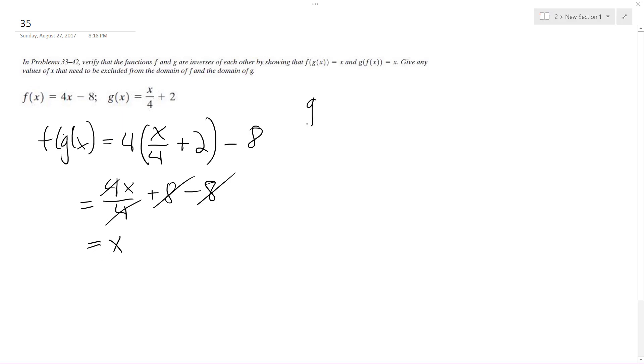And then g of f of x, we end up with same principle. So at four x minus eight over four plus two. We can rewrite this as four x over four minus eight over four, because as long as they keep the same denominator it's okay, plus two. So these cancel, we're left with x minus two and then plus two, so these cancel out and we're just left with x.